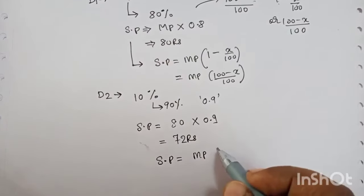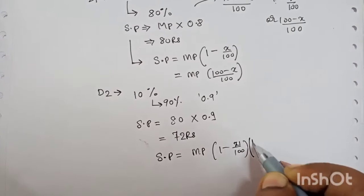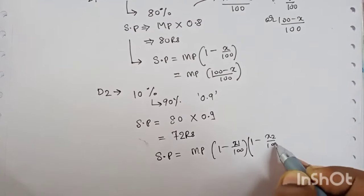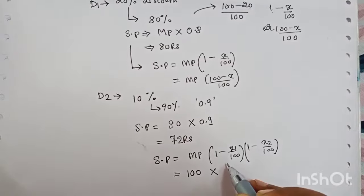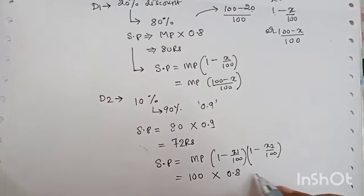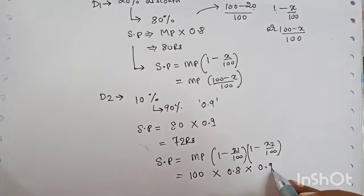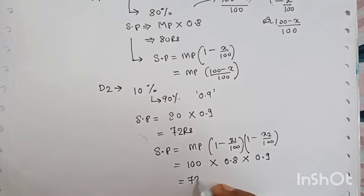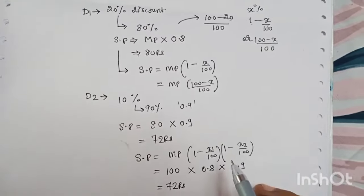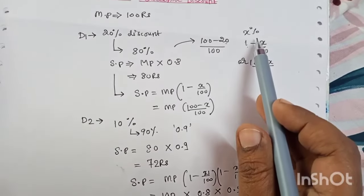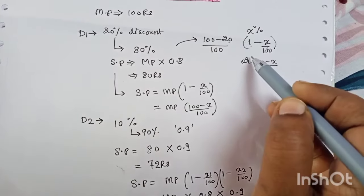The formula for successive discounts is: marked price × (1 − x1/100) × (1 − x2/100) and so on. In this case it was 100 × 0.8 × 0.9 = 72 rupees. So from this you have understood: if there is a discount x, the factor to multiply is (1 − x/100) or (100 − x)/100.